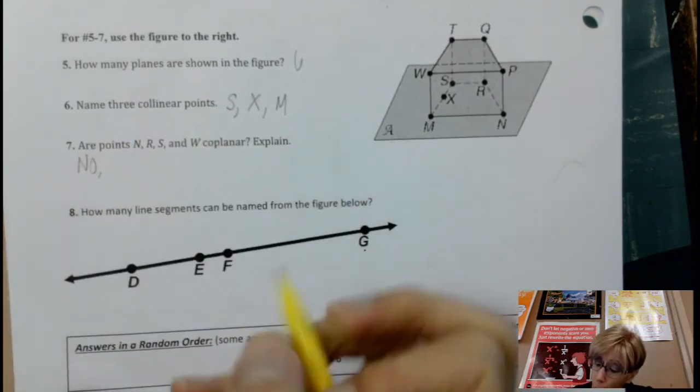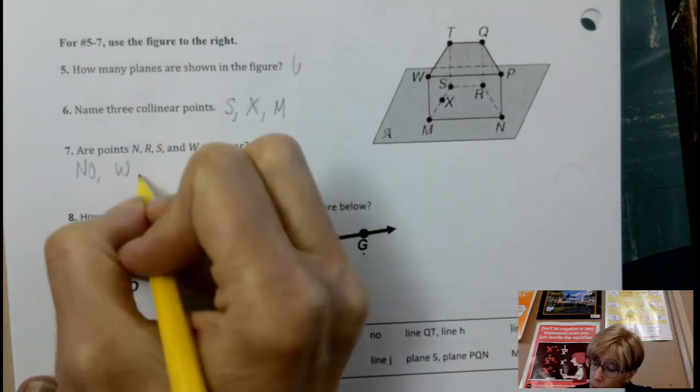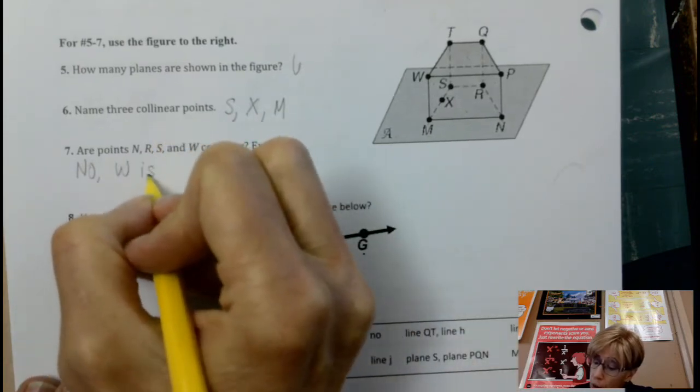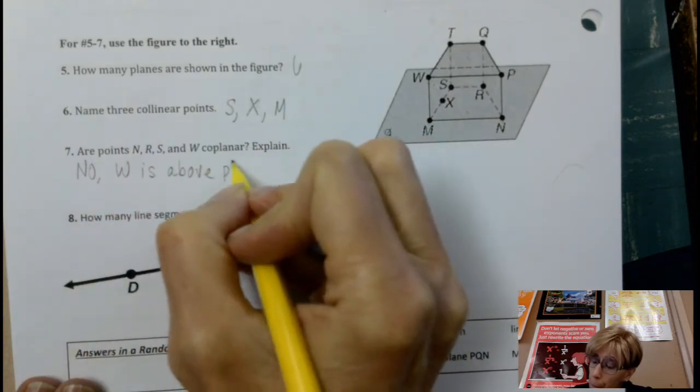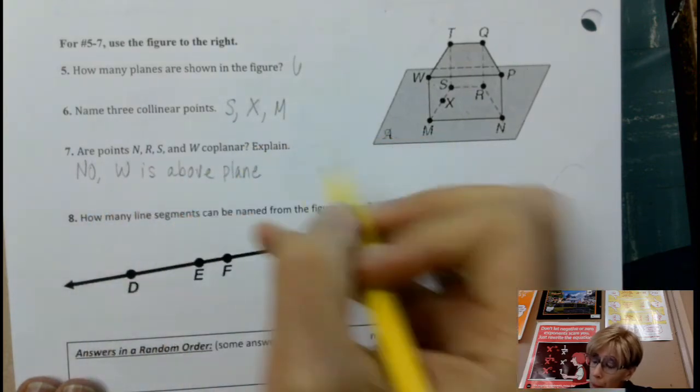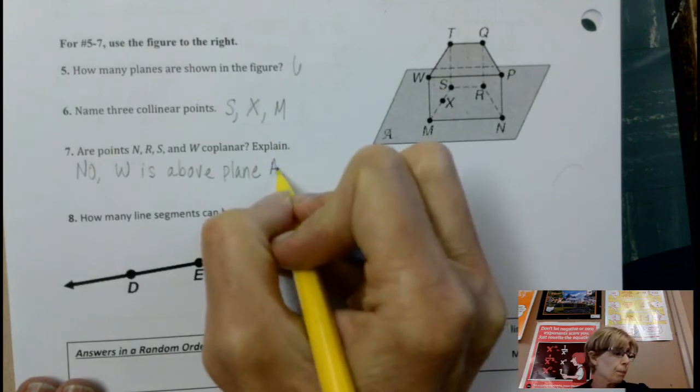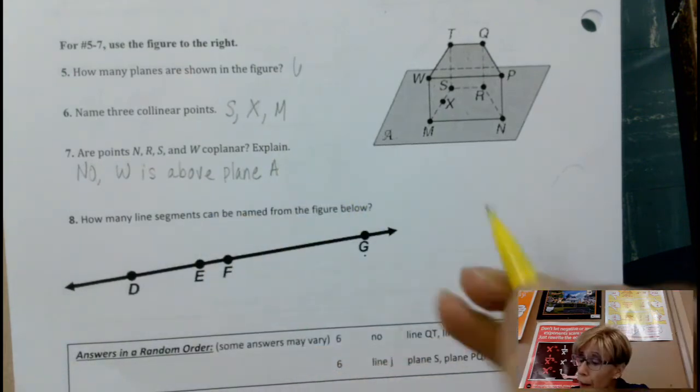Problem number eight, how many line segments can be named in this figure below? I found the best way to do this problem was just to write down, because it's segments. So remember segments are parts of the line. So if we start with this, I did D E,